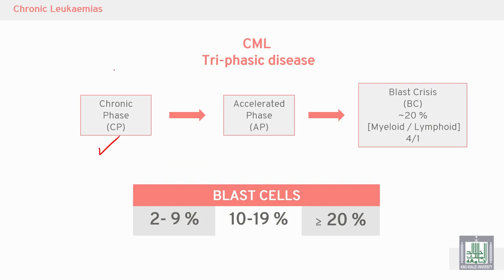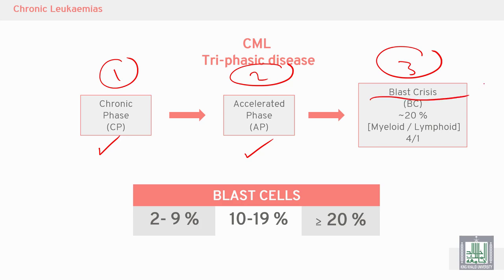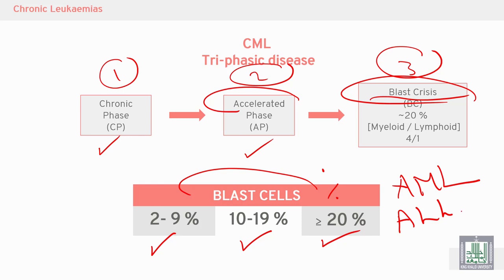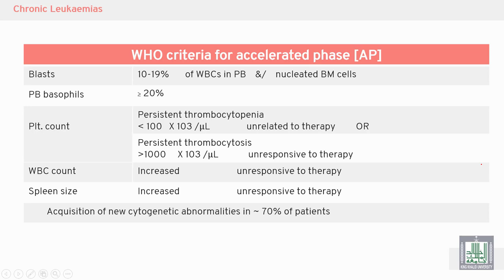The chronic phase starts, then the accelerated phase is transient, and the final phase is blast crisis. According to the blast cell percentage, we diagnose: chronic phase at 2-9% blasts, accelerated phase at 10-19%, and blast crisis at 20% or more — either AML or ALL. About 75% of cases are AML and 25% are ALL.